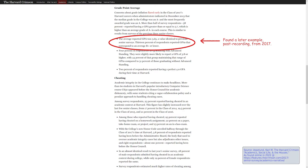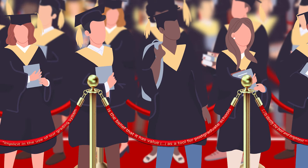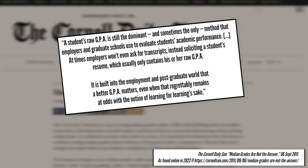State schools have lower GPAs. For example, Penn State's average is 3.12 and Ohio State's is 3.17. This general range of GPA is typical. It's about in this zone. Post-grad programs look at GPA and tend to like 3.0 to 3.5, but the higher, of course, the better. As the Cornell Daily Sun noted, a student's raw GPA is still the dominant and sometimes the only method that employers and graduate schools use to evaluate students' academic performance. At times, employers won't even ask for transcripts, instead soliciting a student's resume, which usually only contains his or her raw GPA. It is built into the employment and post-graduate world that a better GPA matters, even when that, regrettably, remains at odds with the notion of learning for learning's sake.